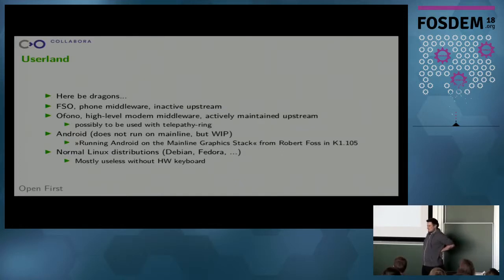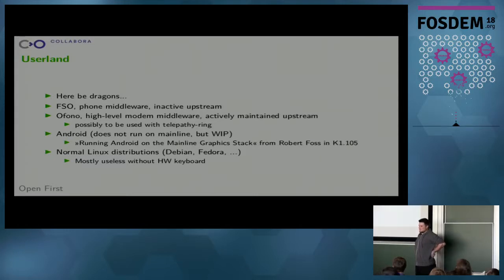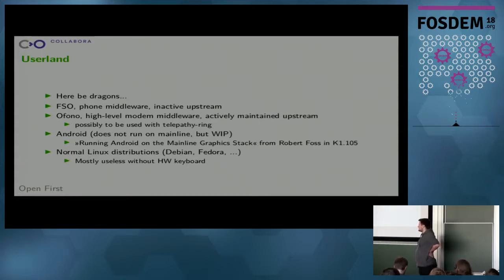I can't tell you many things about the user space. What I can tell you is that there are two different implementations that act as an interface to the modem, abstracting away different vendor implementations. One of them is the freesmartphone.org stack, which is more or less abandoned upstream — last change was about three years ago. And there's Ofono, which only abstracts away the modem. FSO does an abstraction layer for all the peripherals, not just the modem. Ofono concentrates on the modem but is still supported upstream, with the last change probably from yesterday or so. And it does support the Motorola Droid 4.